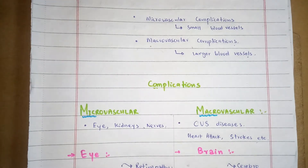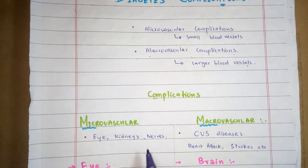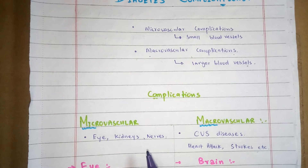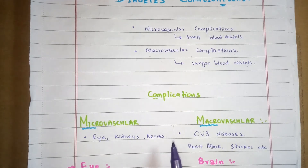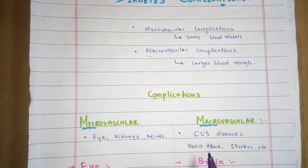Damage to the eyes is called retinopathy, which may lead to blindness. Damage to the kidneys is called nephropathy, which may lead to renal failure. Damage to the nerves — in the case of microvascular complications — is called neuropathy, which may lead to impotence and foot disorders. Macrovascular complications include cardiovascular diseases involving the heart, brain, and foot disorders.